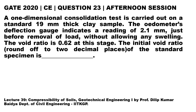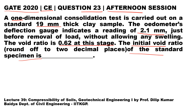Hello students, let's look at question number 23 from the GATE 2020 Civil Engineering afternoon session. The question states that a one-dimensional consolidation test is carried out on a standard 19 mm thick clay sample. The odometer deflection gauge indicates a reading of 2.1 mm just before removal of load, without allowing any swelling. The void ratio is 0.62 at this stage, and the initial void ratio e0 is asked.